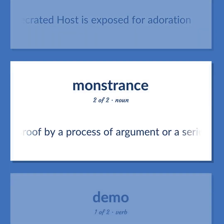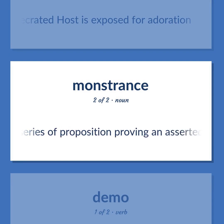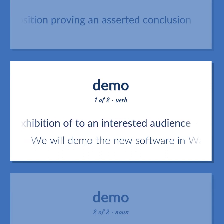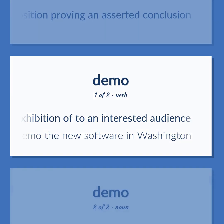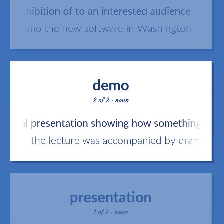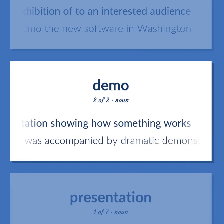Demonstration: Proof by a process of argument or a series of propositions proving an asserted conclusion. Give an exhibition of to an interested audience — we will demo the new software in Washington. A visual presentation showing how something works; the lecture was accompanied by dramatic demonstrations.